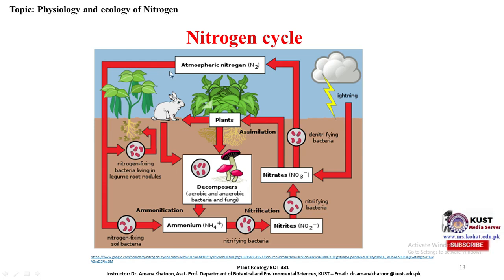A third pathway is non-symbiotic nitrogen-fixing bacteria in the soil. These bacteria ammonify molecular nitrogen into ammonium ion (NH₄⁺). Since ammonium is not easily taken up by plants, nitrifying bacteria further convert it into nitrites and then nitrates, which are ready to be absorbed and assimilated by plants.